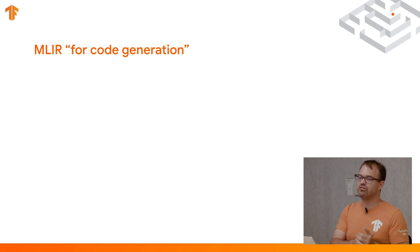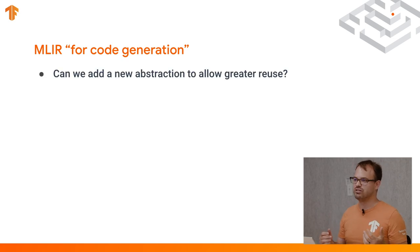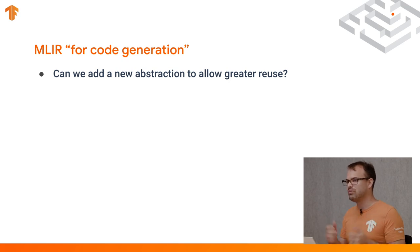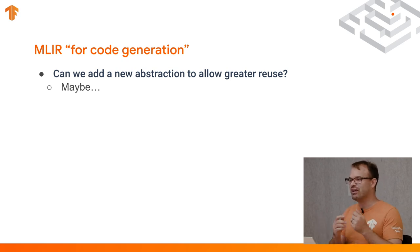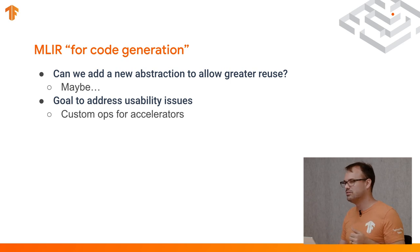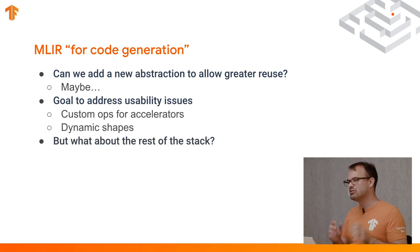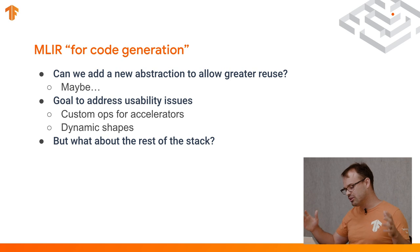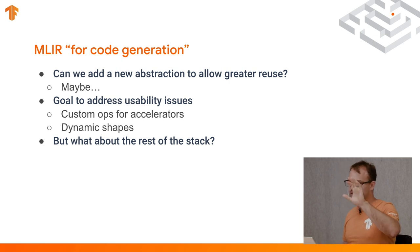Our first question was: can we add a new abstraction to the library to use? One of our goals was to address some usability issues with the current stack — one of them was custom ops for accelerators, the other was dynamic shapes. But assuming we had done this, what happens with the rest of the stack? Because the goal is still an end-to-end TensorFlow user experience. So, roughly split out, the stack has TensorFlow doing optimizations on the TF graph specifically for targeting TPU.